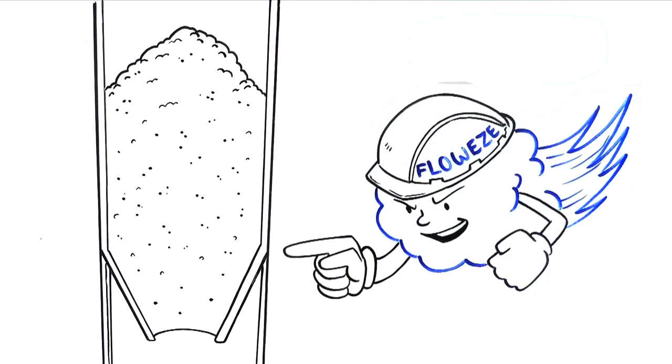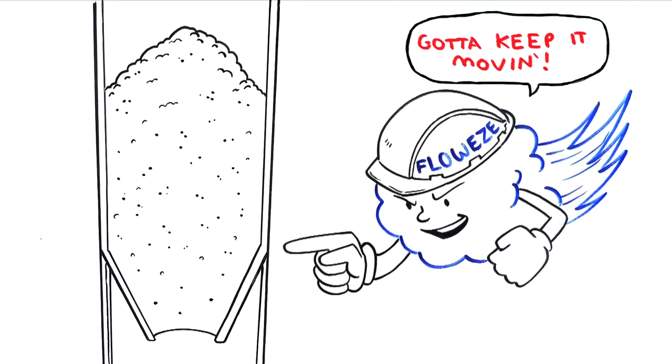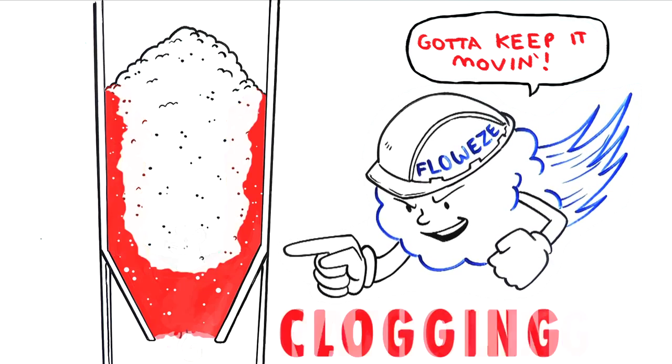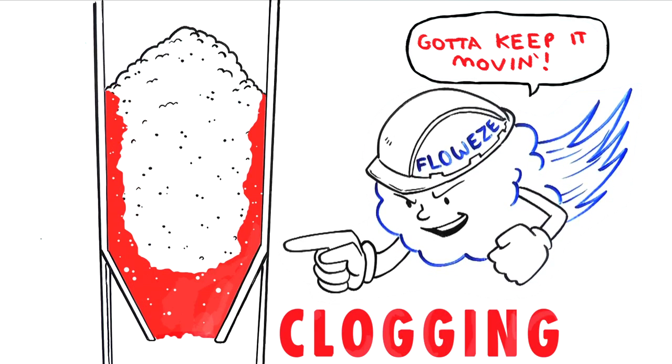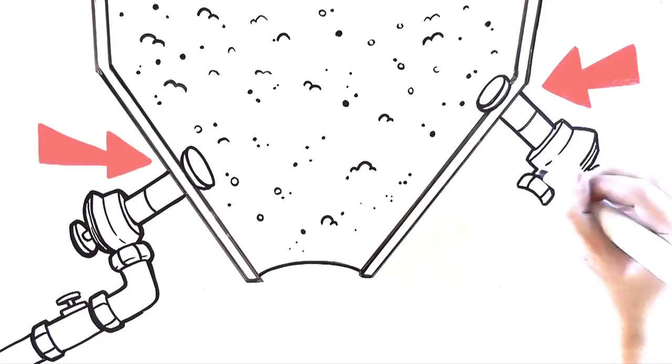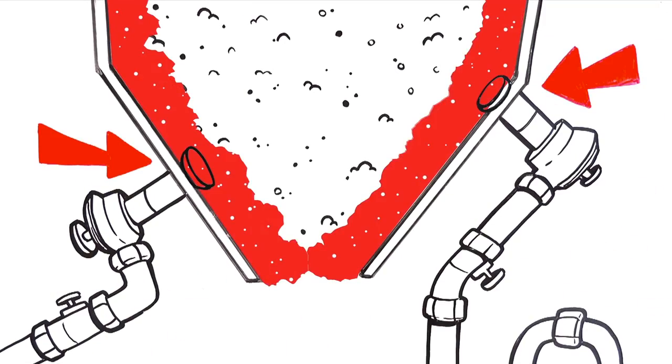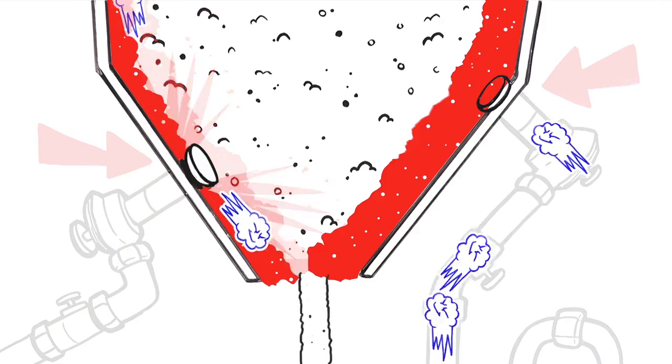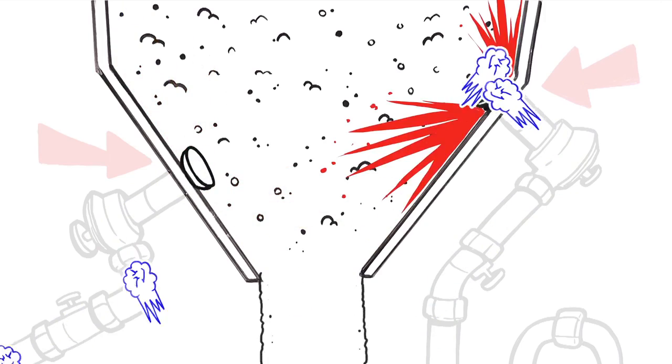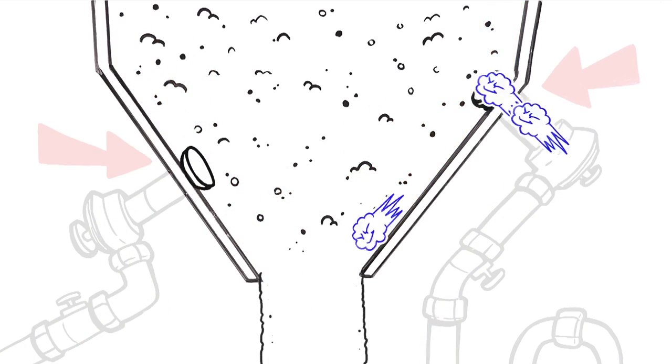The AirSweep blasts compressed air along the vessel wall to eliminate bridging, rat holing, and clogged material to keep it moving. Usually AirSweep nozzles are installed around the lower walls and bottom of the vessel to be flushed. The nozzles are pulsed in sequence to activate and lift sections of material off the walls and sweep it out of every nook and cranny.